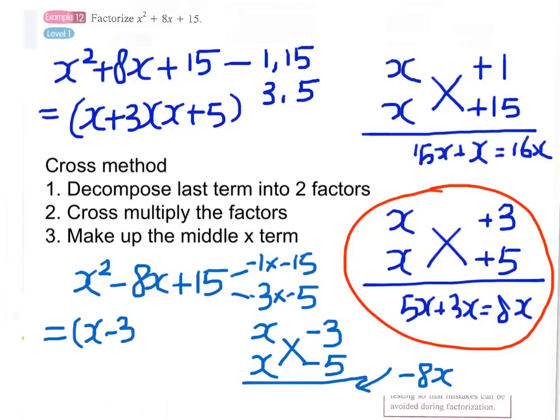Therefore the answer is x minus 3 multiplied by x minus 5.